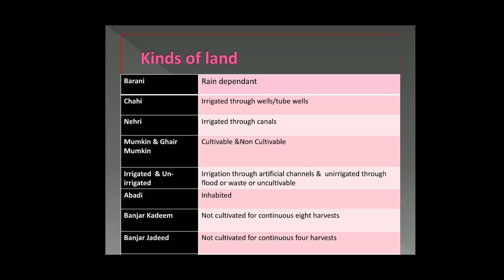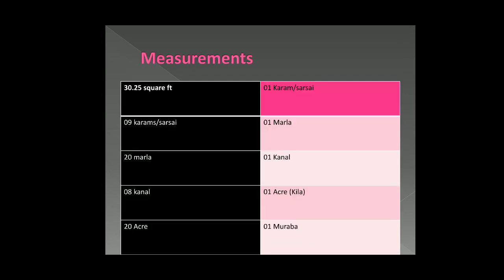These are terminologies you will come across during your practice. Regarding measurements: 30.25 square feet equals one karam or sarsai. Nine karams equal one marla. Twenty marlas equal one kanal. Eight kanals equal one acre or killa. And twenty acres equal one murabba. These measurements are provided for your convenience as you will encounter them in practice.